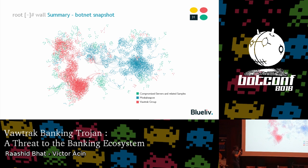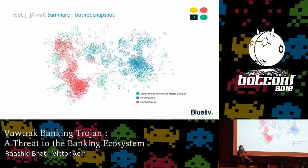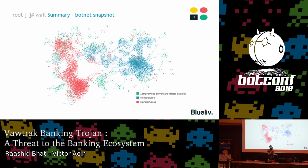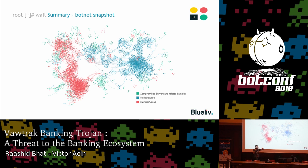Moscow Zappo was, at least at the beginning, distributing Vawtrak using Pony. We would find a compromised server holding a Vawtrak sample being downloaded by a Pony, and this Pony was reporting stolen credentials to another server, linking both servers and the distribution of Vawtrak between the two infrastructures.